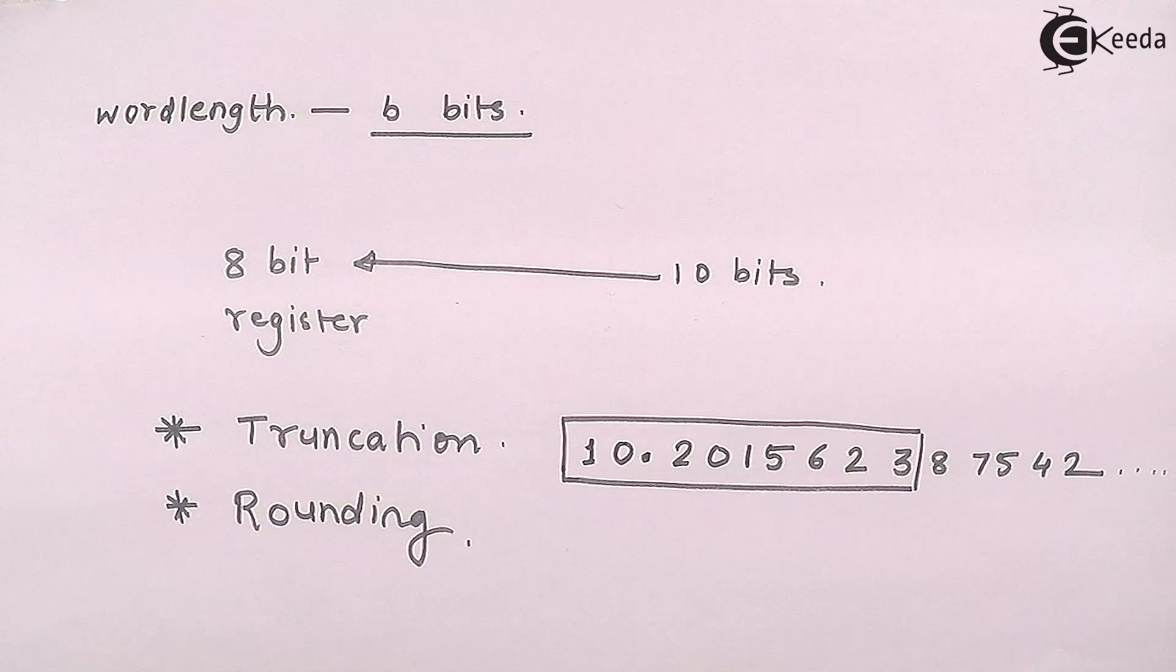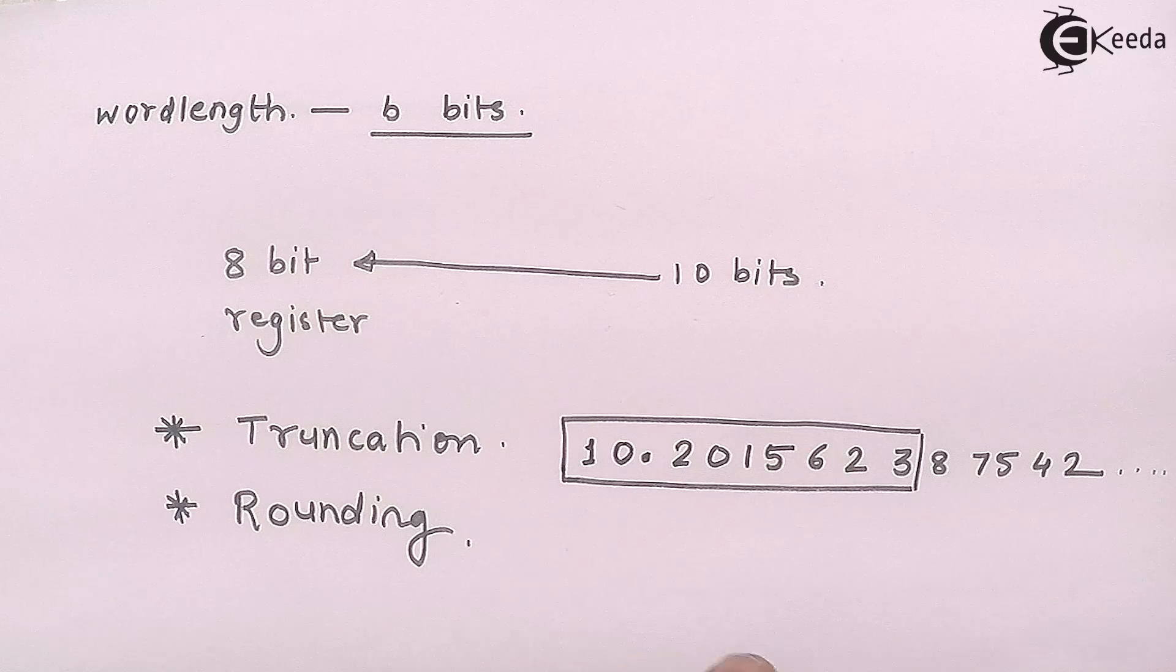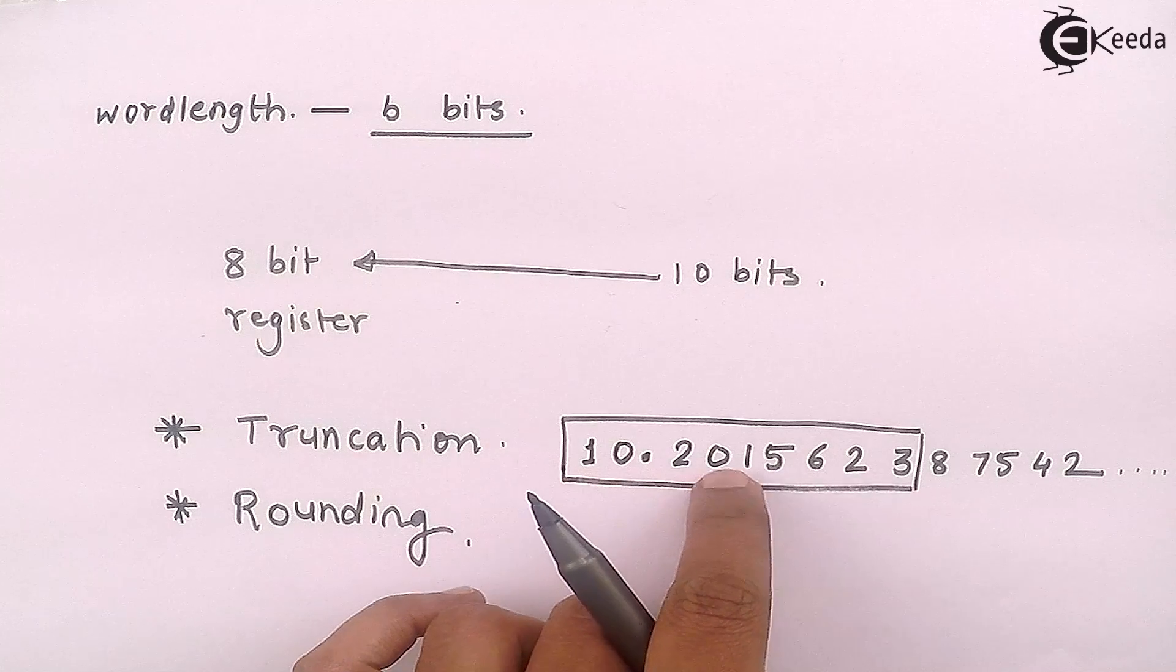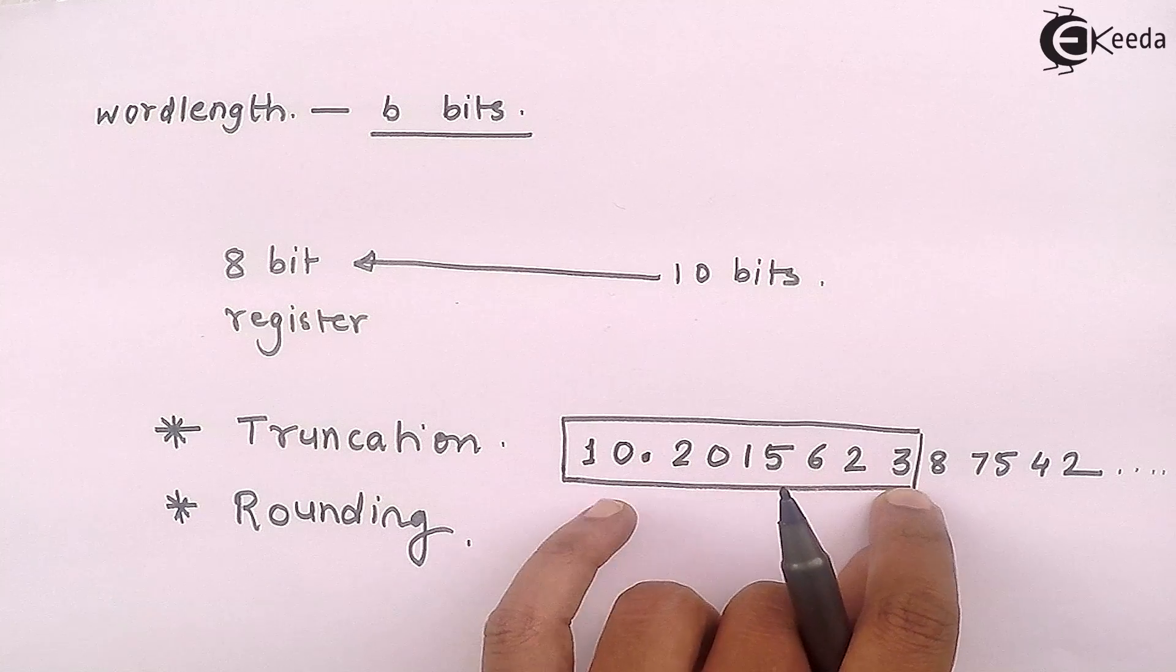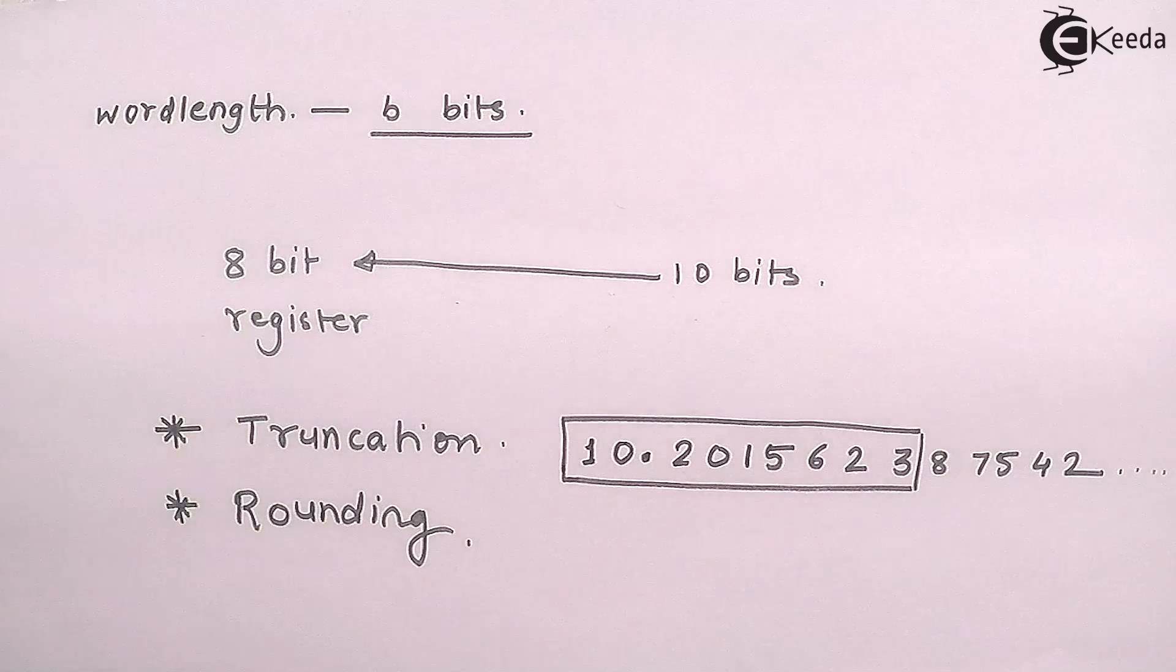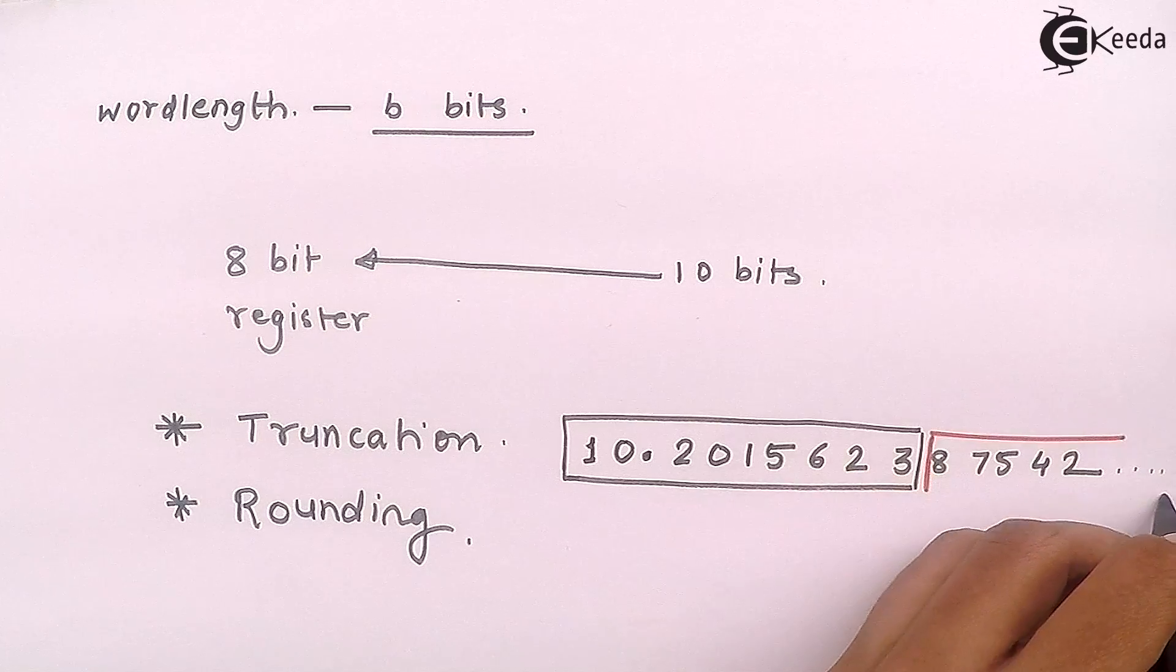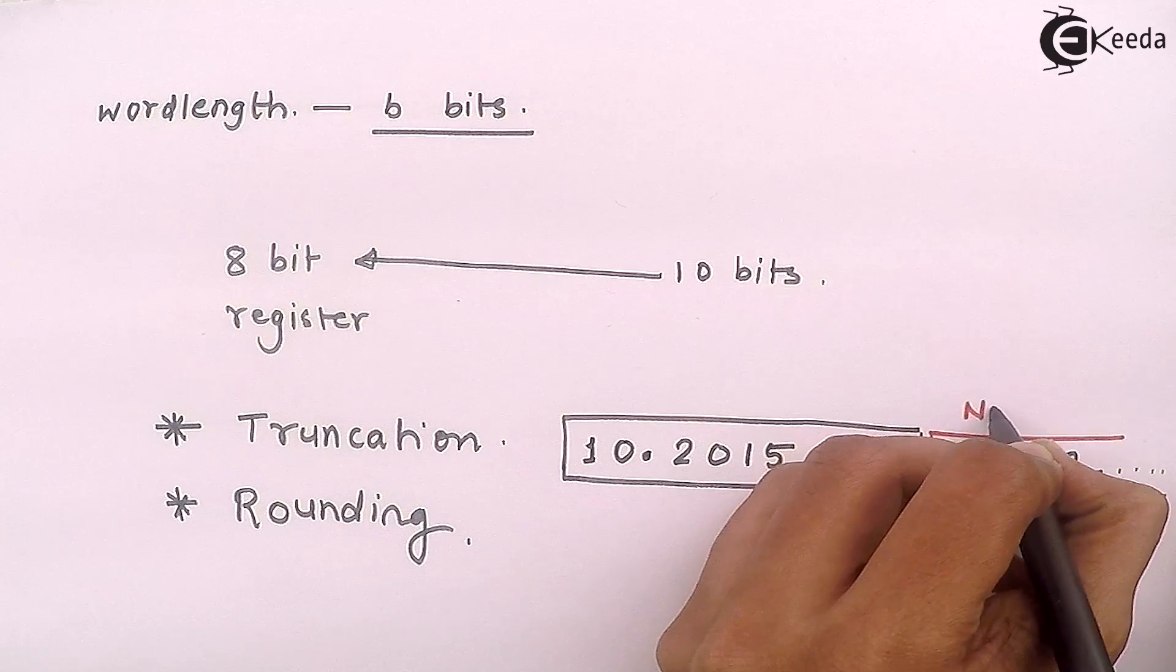We normally see that if suppose I neglect from 8 onwards, I will consider only 10.2015623 and from 8 onwards I will neglect the number. If I do so, this number is being neglected from here onwards, this is neglected.